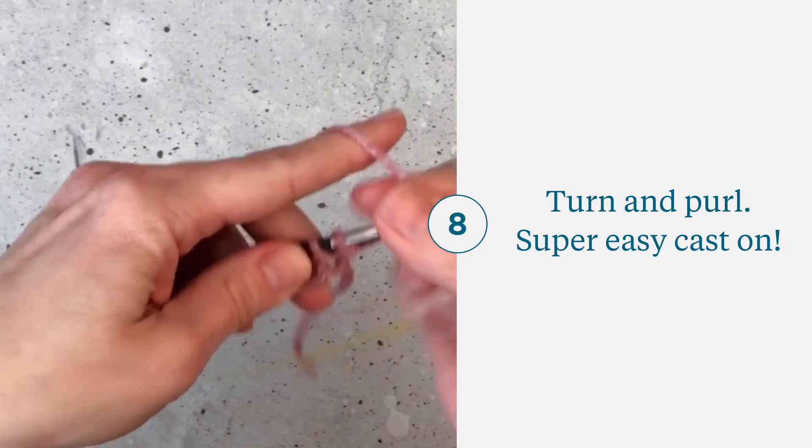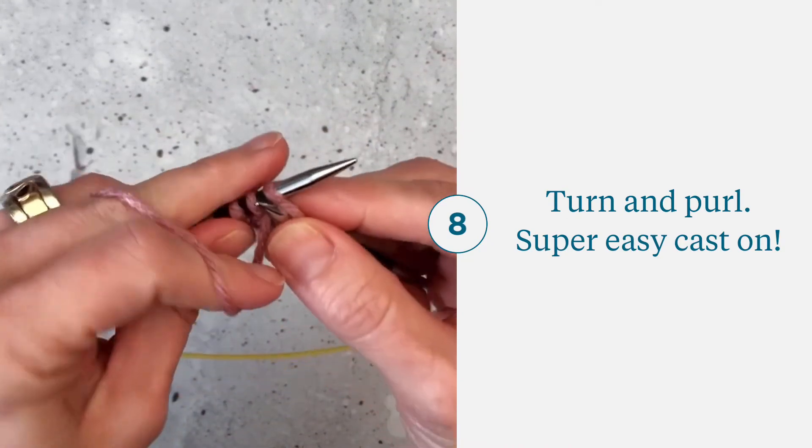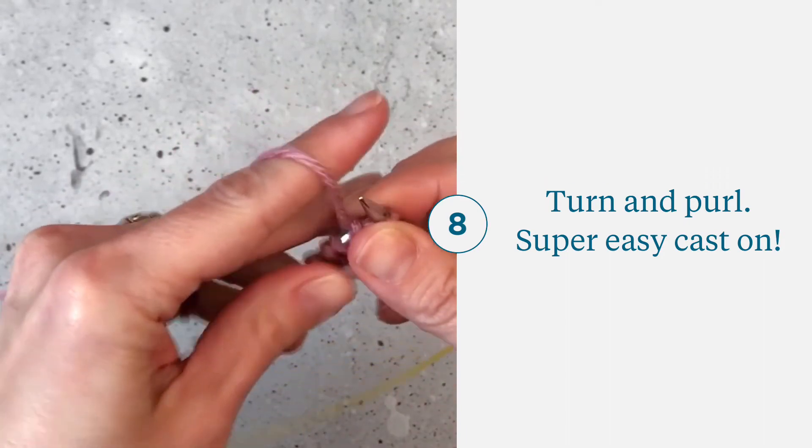Now I can purl on this side. Yarn over, down, slide it off.